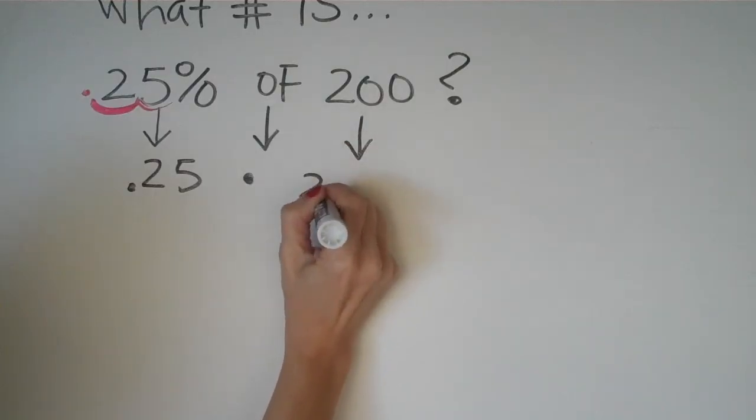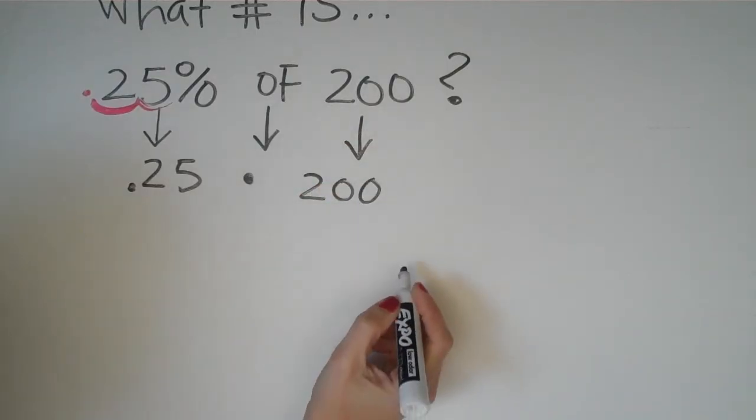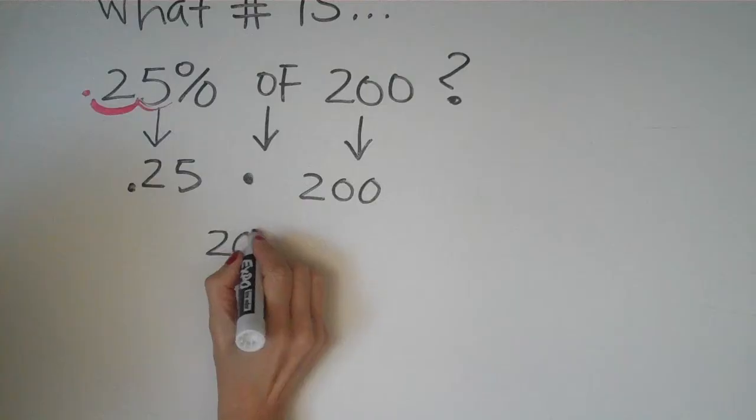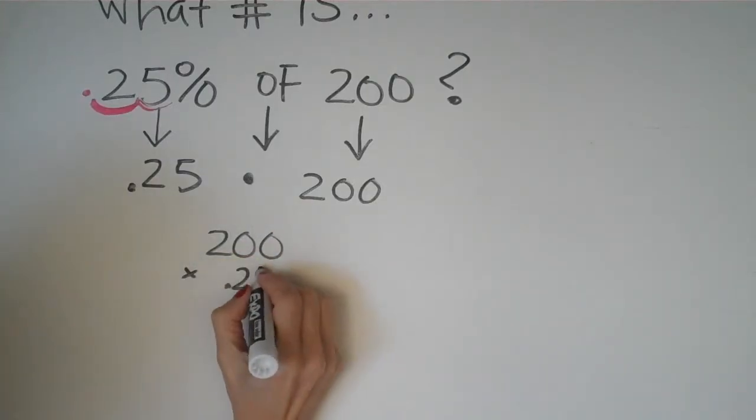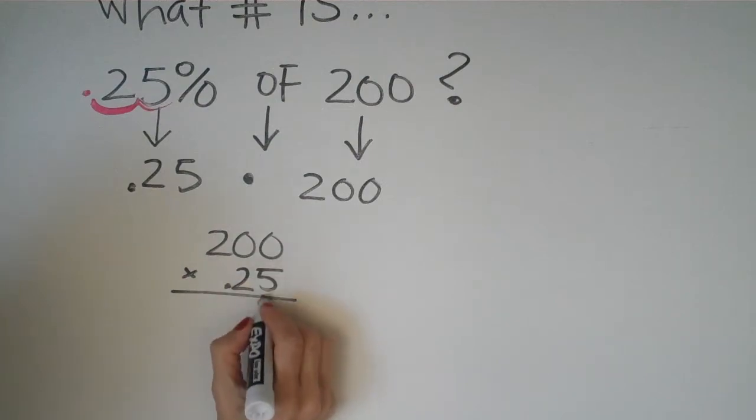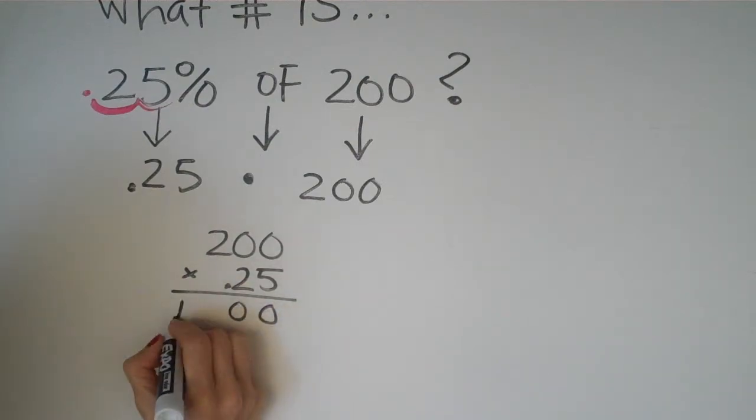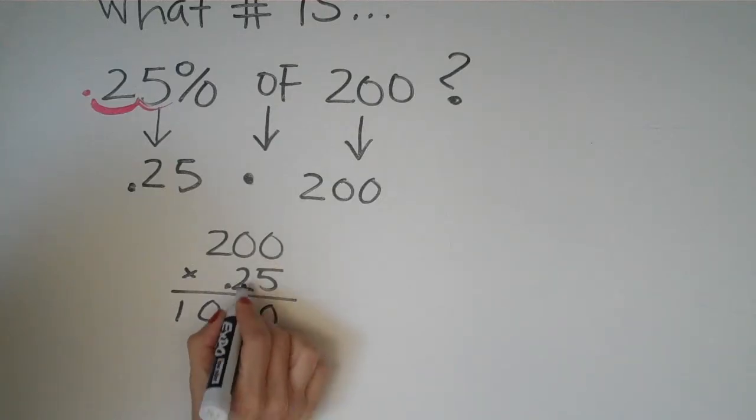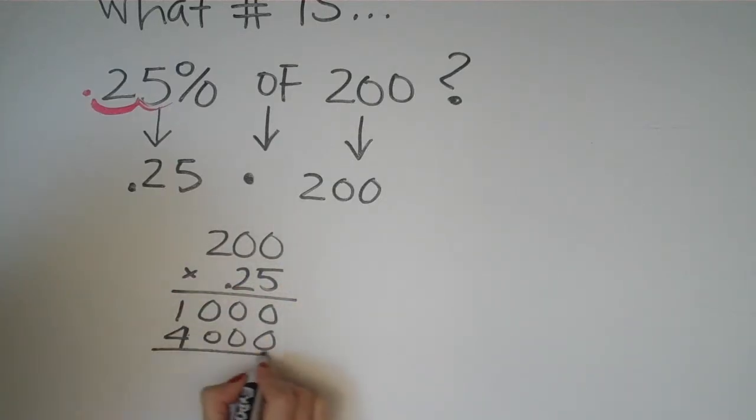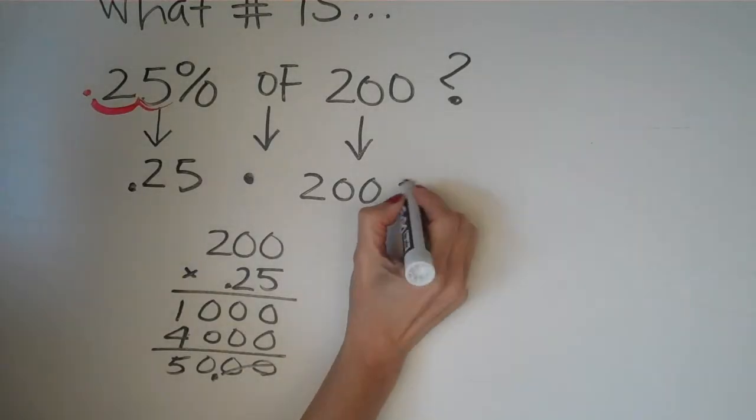200, and the rest is just simple multiplication. If we have 200 times 0.25, we do the multiplication: two times five is ten, zero down, zero, zero, that's a four. We add it all up and get five thousand, but we want to go two places over, one two, and our answer becomes fifty. So 25% of 200 equals 50.